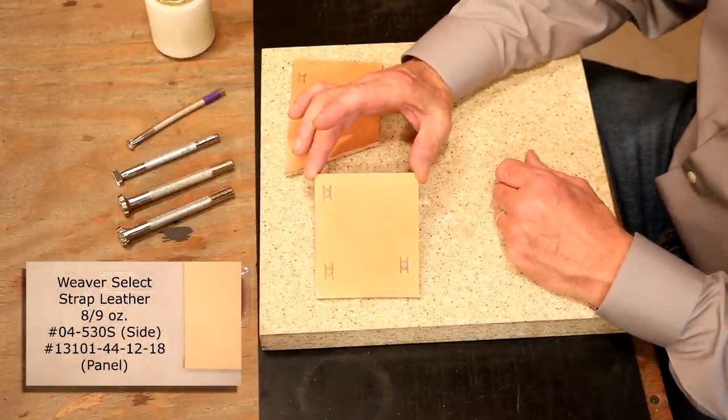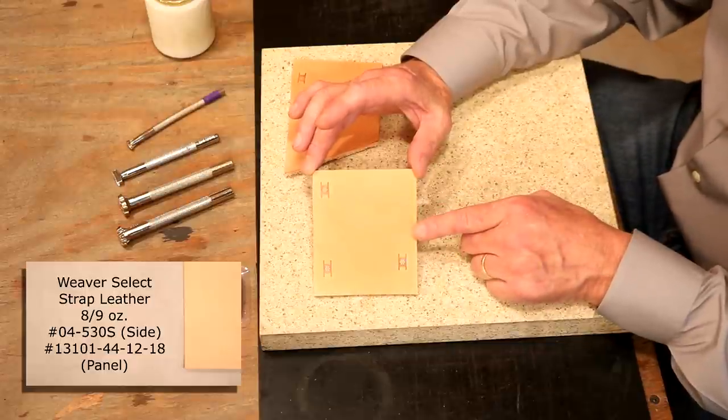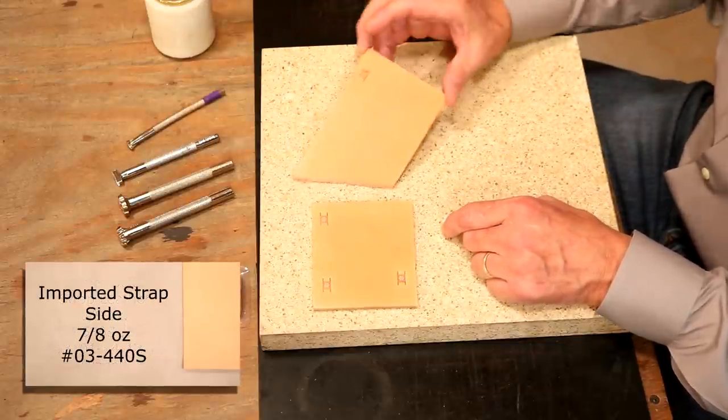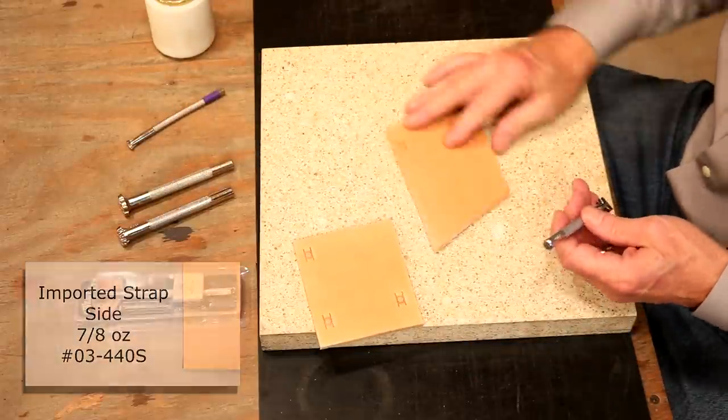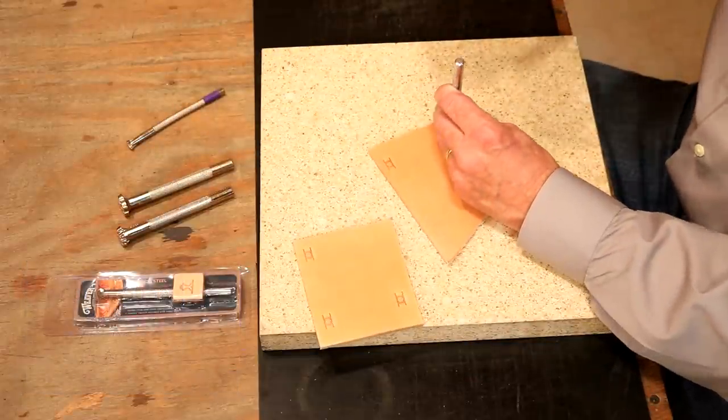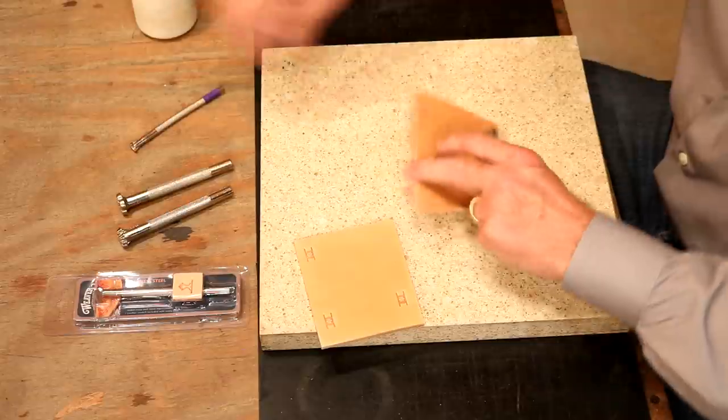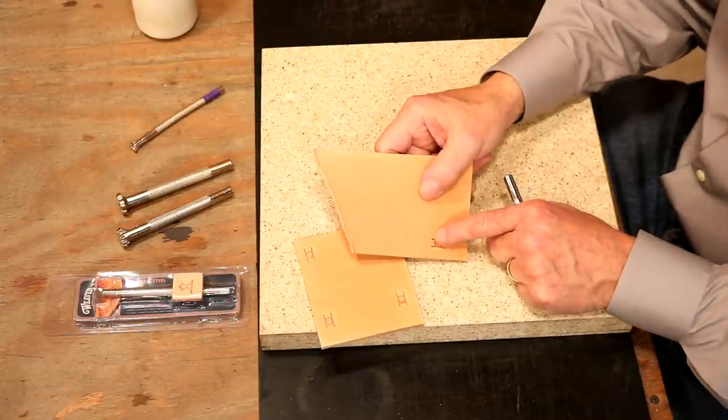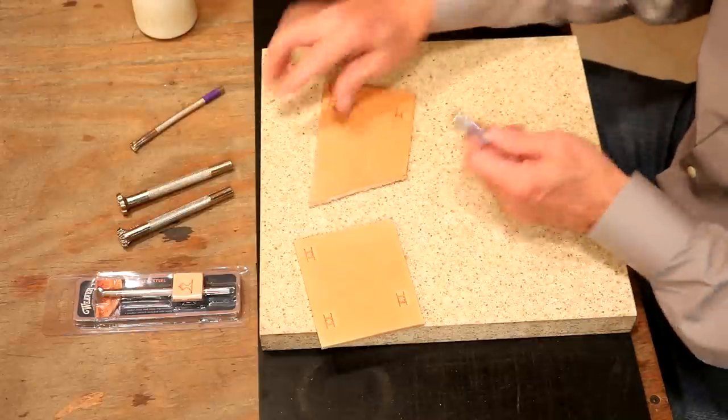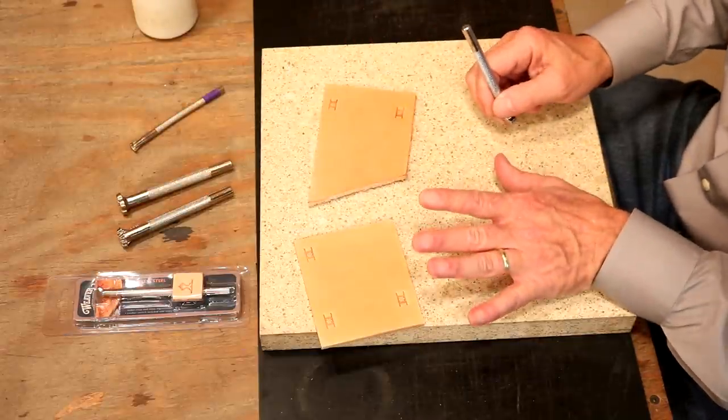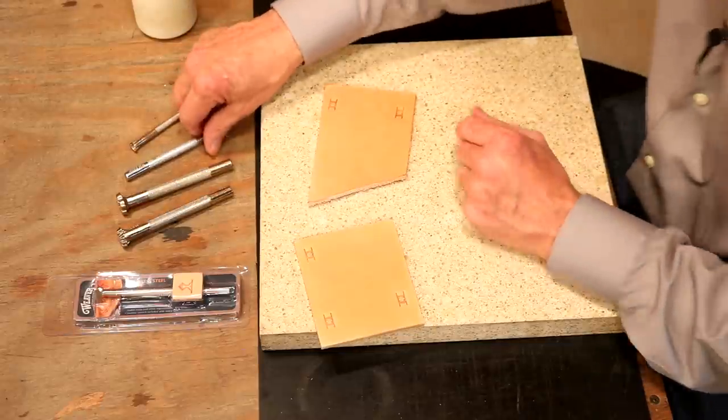On our leather, this is our Weaver Select, my absolute favorite leather. Right here, this is our import strap side. Let's try an inexpensive tool over here, cased the same way. Well, that looks good. I'm a little heavy over here, a little light over here. But we're going to talk about that very shortly. We can correct that. We don't want to have to do that, but there's a way to correct that.